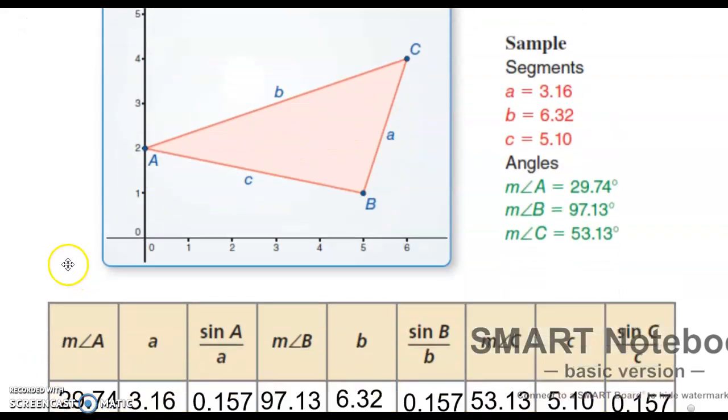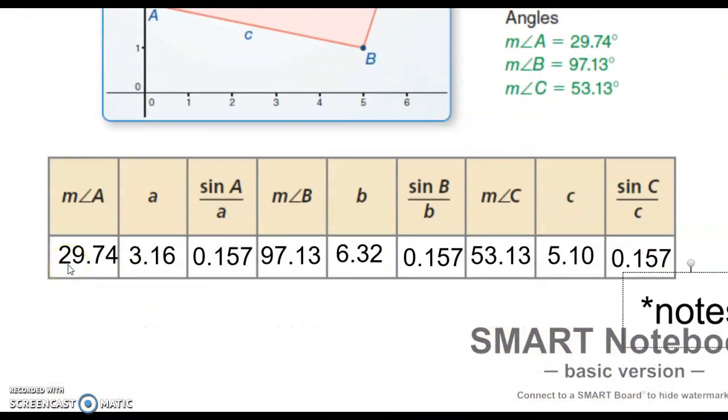After you've completed the values, you should have gotten these numbers. And what is it that you noticed? Well, hopefully you noticed this. The sine of A over A, and the sine of B over B, and the sine of C over C was all the same value. Now that's pretty cool. We're going to, in the next video, start with a GeoGebra activity and see if you've got the right numbers.